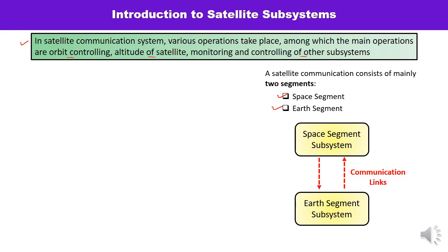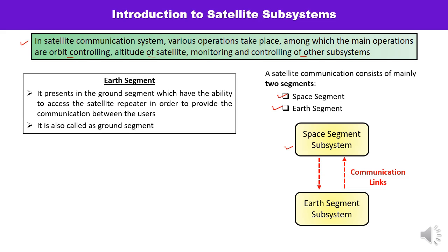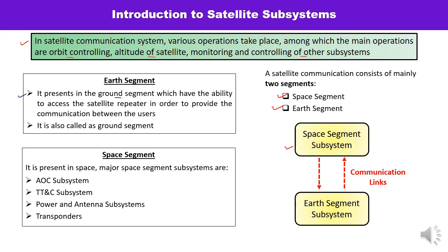The Earth stations — Earth segment subsystems and space segment subsystems — communicate via communication links. These two segments can communicate using communication links. The Earth segment is present on the ground and has the ability to access the satellite repeater to provide communication between users. It is also known as the ground segment.